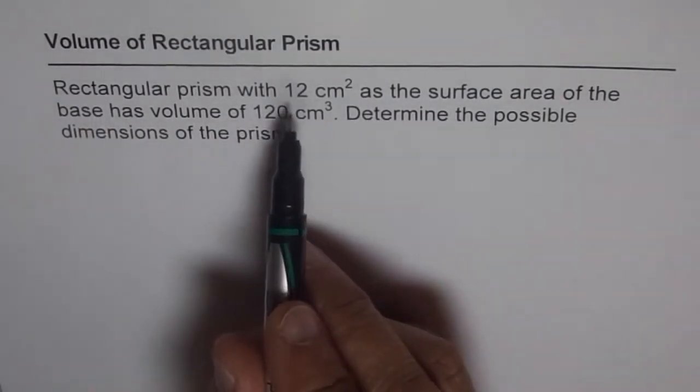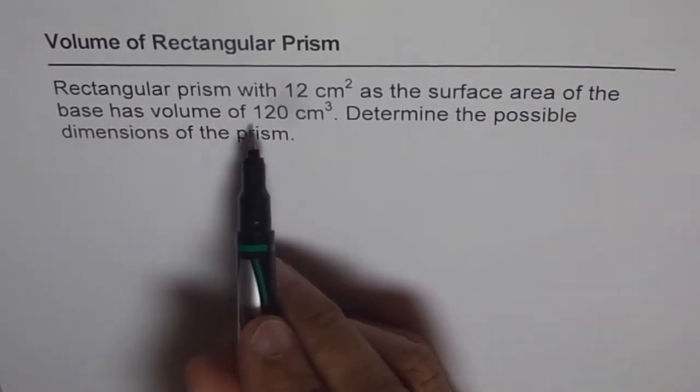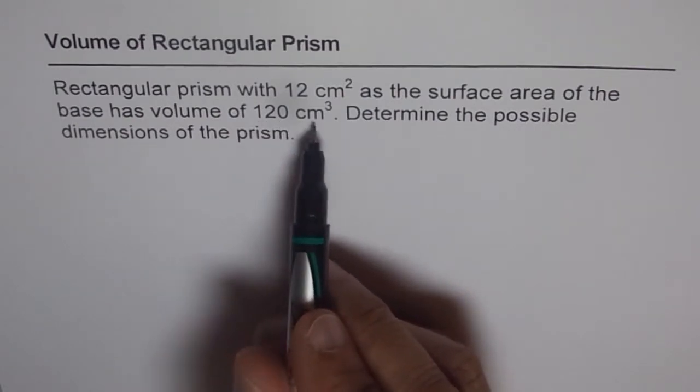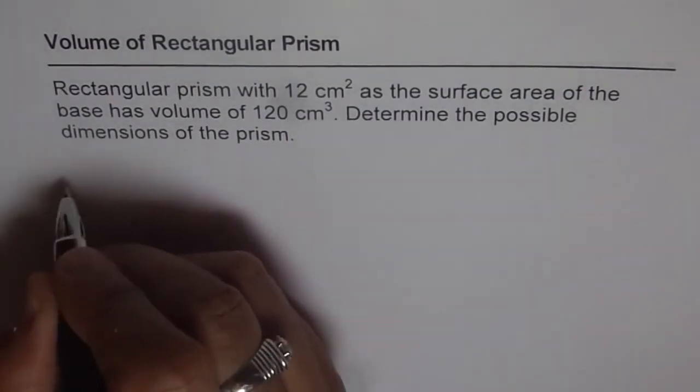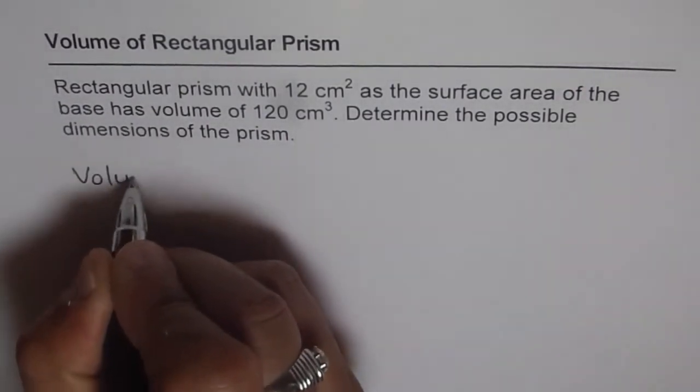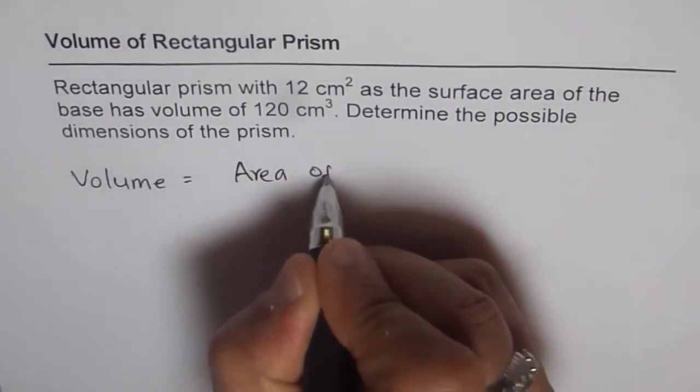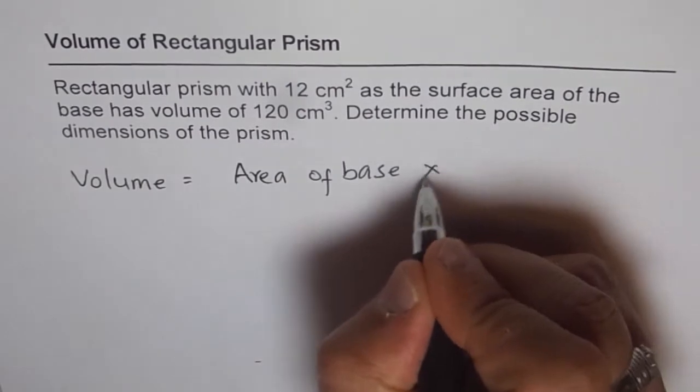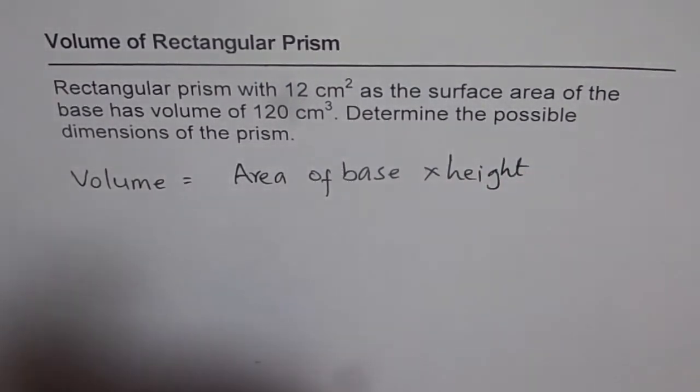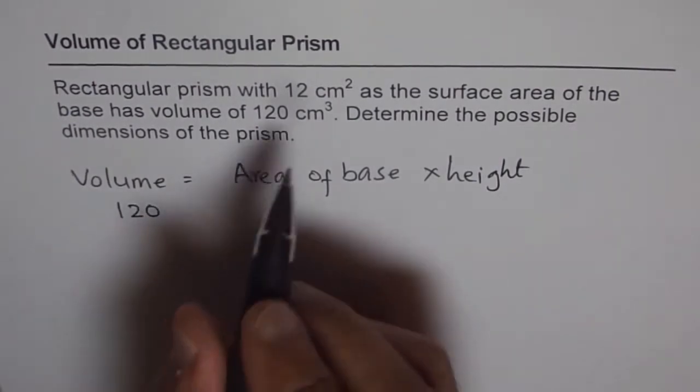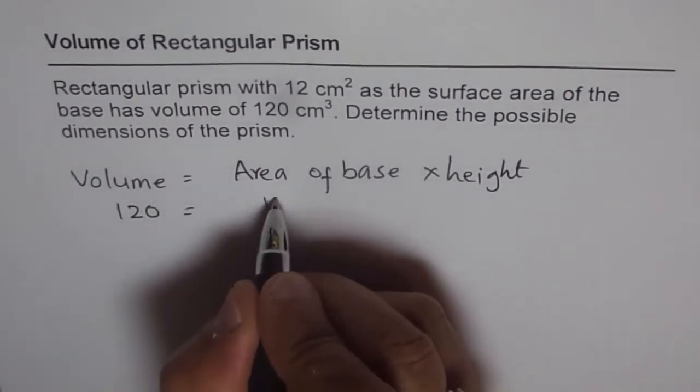Rectangular prism with 12 cm² as the surface area of the base has volume of 120 cm³. So that means one thing. What is volume? Volume equals area of base times height. Now, in this case, we know the volume. Volume is 120 cm³, so I am just writing numbers now. And area of base is 12.